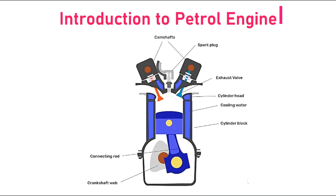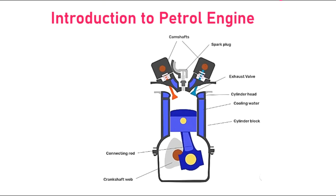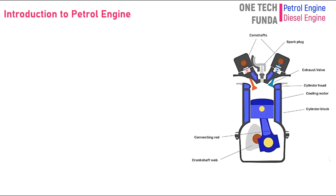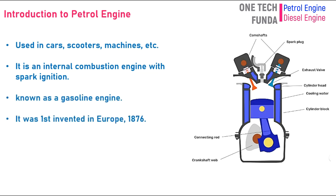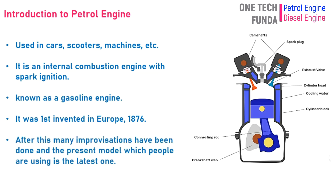Introduction to Petrol Engine. Petrol engines are mostly used in cars, scooters, machines, etc. It is an internal combustion engine with spark ignition, also known as a gasoline engine. It was first invented in Europe in 1876, and many improvements have been made since then.